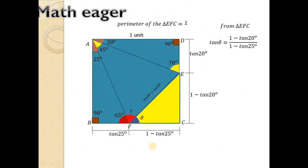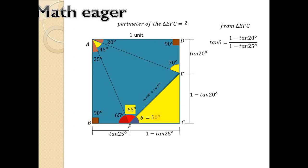So we got the value of theta as 50 degrees. Then the remaining angle will be 180° minus 65° minus 50°, because this is a straight angle which is 65 degrees. So using the trigonometrical method, we have solved this problem.